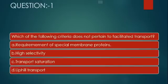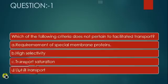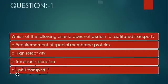The options are: first, requirement of a special membrane protein; second, high selectivity; third, transport saturation; and fourth, uphill transport. As you are seeing the options on the screen, which of the following criteria does not pertain to facilitated transport?